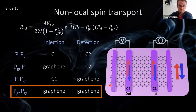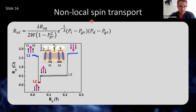Even if we don't use ferromagnetic contacts like cobalt or permalloy, we will still have a spin-related component proportional to the polarization of graphene squared. Based on this formula, depending on the relative sign of graphene polarization with respect to contact polarization and the values of all three numbers, we will have different shapes of spin valves. And that is how it looks for this particular sample.